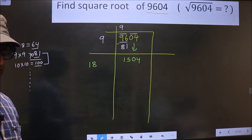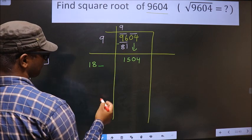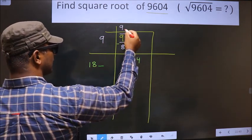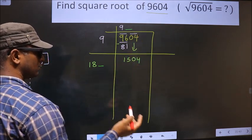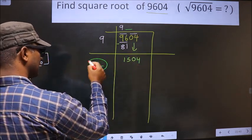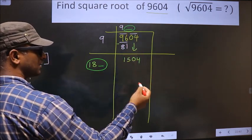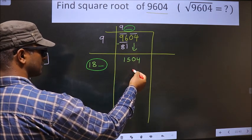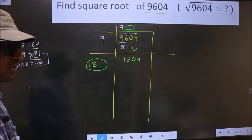Next, I should write a number here. The condition is: whatever number I take here, I should write the same number here also. When I multiply this and this, the resulting number should be equal to this or smaller than this, but not exceeding this number.